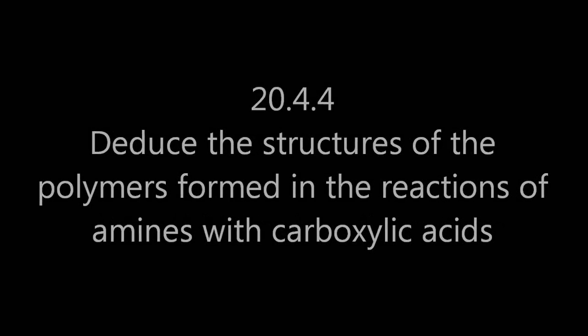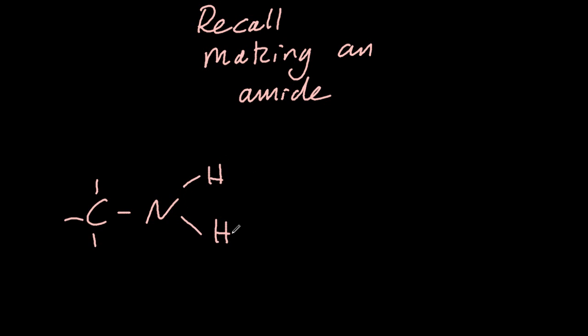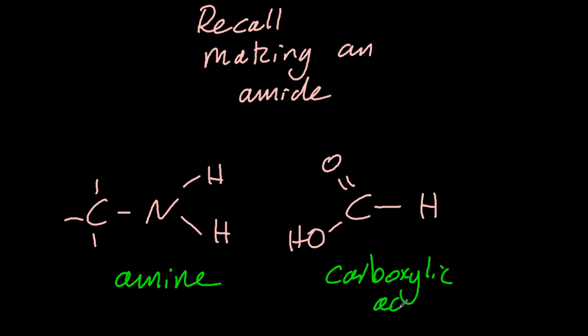Making polyamides. Well, we both know that you've forgotten how to make an amide, so let's kick off with reviewing that. So there's an amine and a carboxylic acid. This is a condensation reaction, which means that a small molecule is produced. That one there is removed to make water, and the product is an amide.